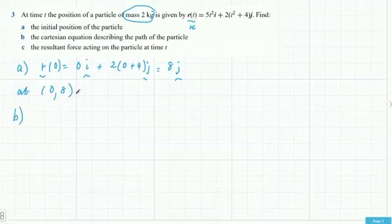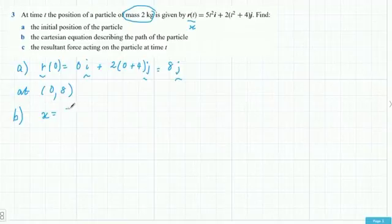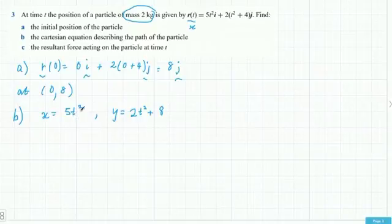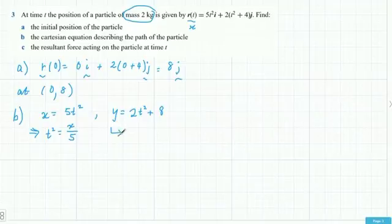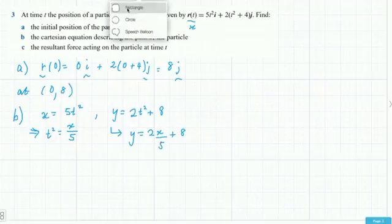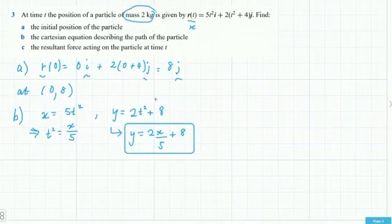Part B: what's the Cartesian equation? To find Cartesian equations, go from parametric to Cartesian. The parametric equations are: x is everything in front of i, y is everything in front of j. Expanding gives x and 2t squared plus 8. The link is t squared: rearranging gives t squared equals x over 5, so y equals 2 times x over 5 plus 8, which simplifies to 2x on 5 plus 8. The Cartesian equation is linear.